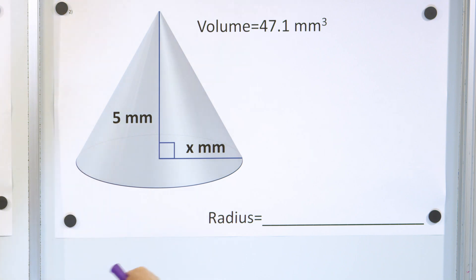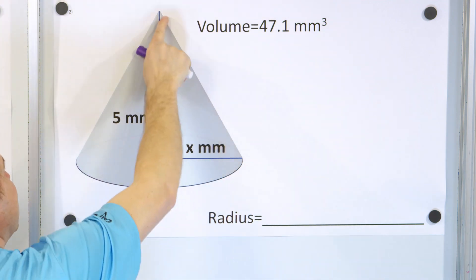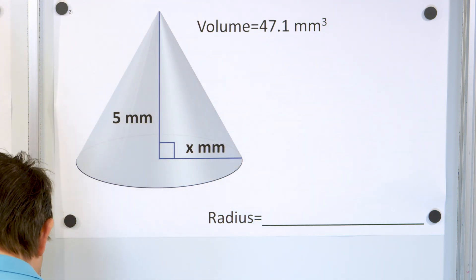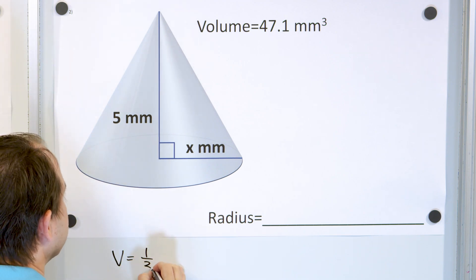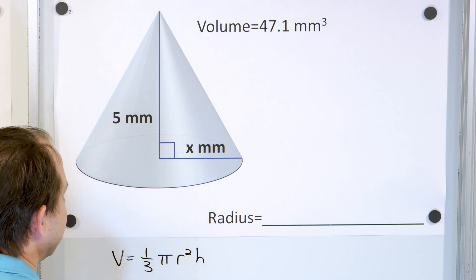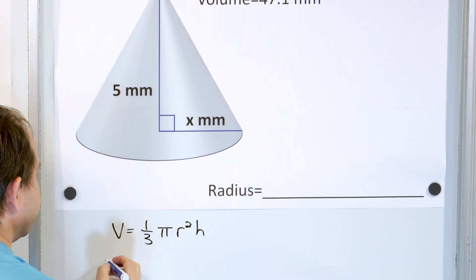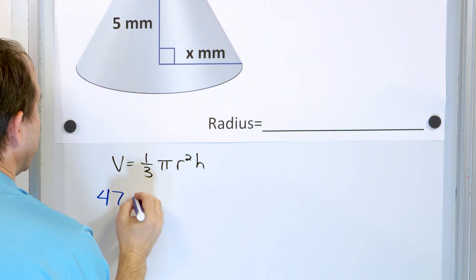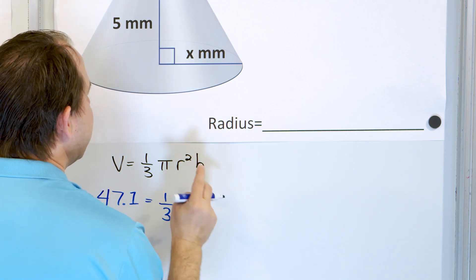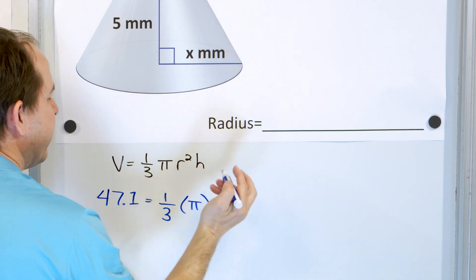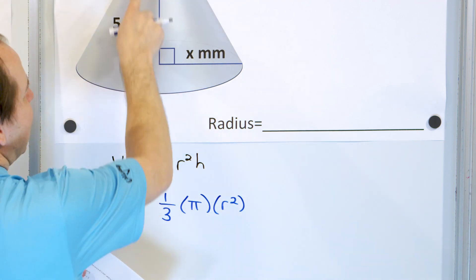Problem number two. Again, I'm giving you the volume, but instead of asking you for the height, I'm going to ask you for the radius, and that's going to require a little bit more thinking. The volume of any cone is one-third times pi times r squared times h. The volume is 47.1 cubic millimeters. I'm trying to find the radius, so I'll leave the variable as r, and the height is 5.